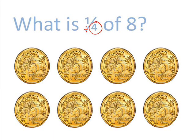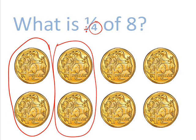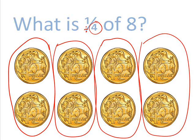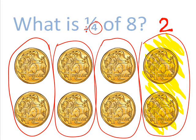The bottom number on a fraction I always think of as the dividing number. So, if we get eight and we divide it up into four equal parts, as you see, the answer is two. So a quarter of eight is two.